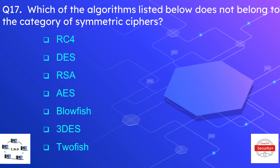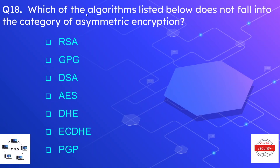Question number seventeen: which of the following algorithms does not belong to the category of symmetric ciphers? The correct option is RSA — RSA is an asymmetric algorithm and the rest are symmetric. Question number eighteen: which of the algorithms listed below does not fall into the category of asymmetric encryption? The correct option is AES — AES is symmetric and the rest are asymmetric algorithms.